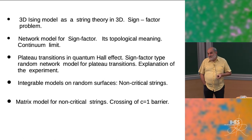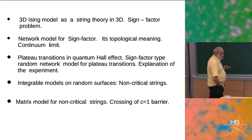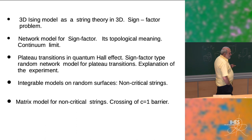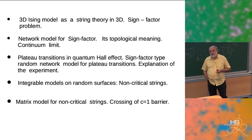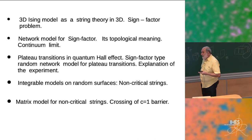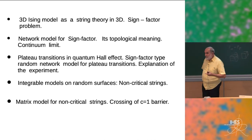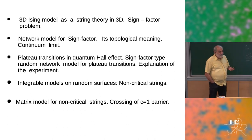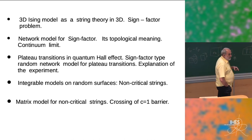Besides, the group SU2 should be changed to U1, and then it will explain the plateau transition in the quantum Hall effect. Some kind of two-dimensional gravity will appear there, demonstrating that non-critical string theories are working there as well.